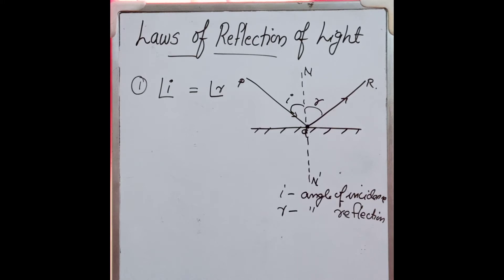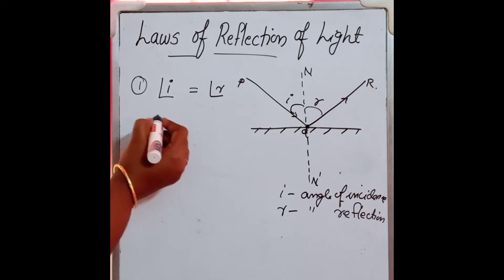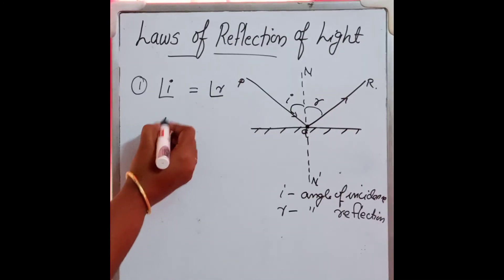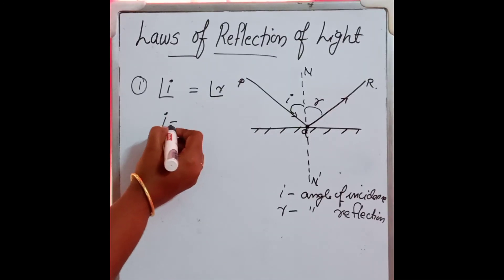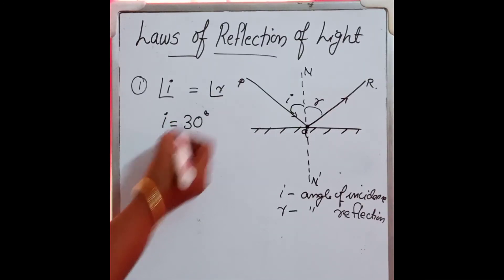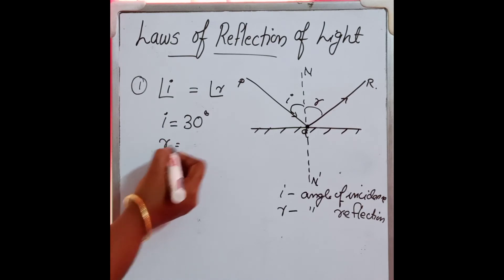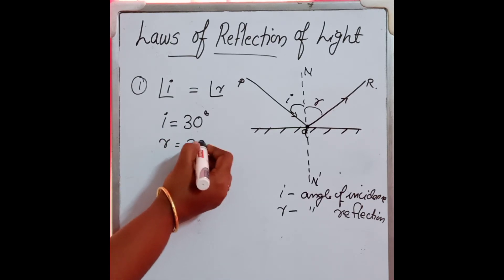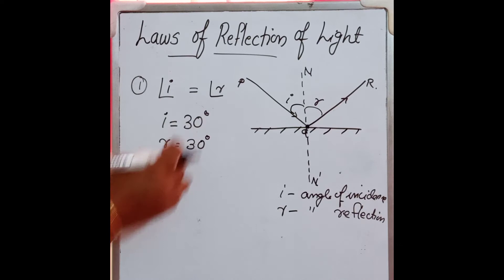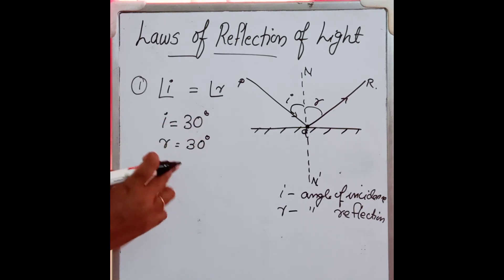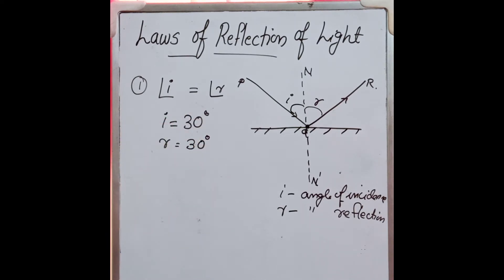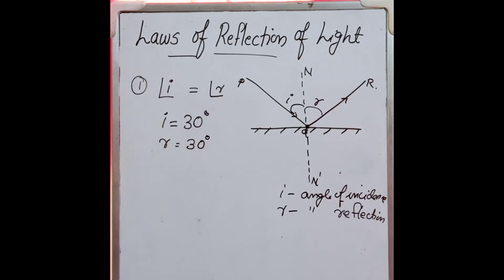The angle of incidence is always equal to the angle of reflection. That means, if angle I is 30 degrees, angle R will also be 30. If I is 45, R will also be 45. Whatever the value of I, R will have the same value. This is the first law of reflection of light.